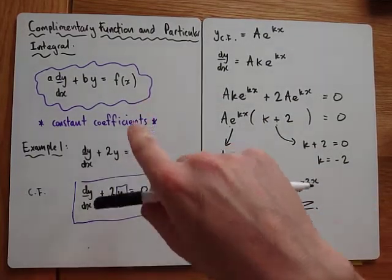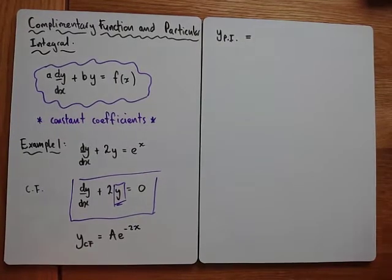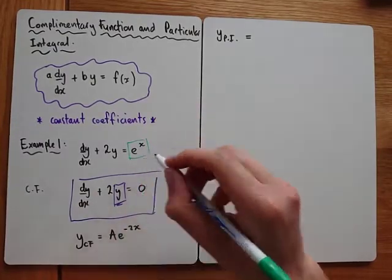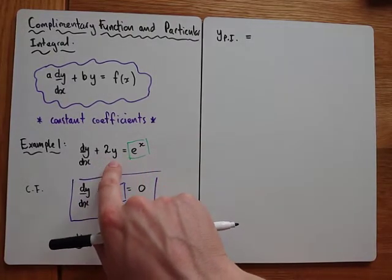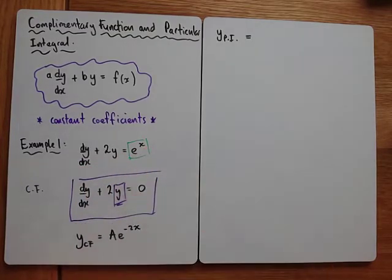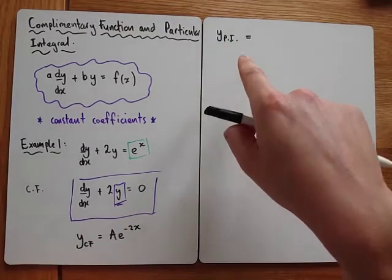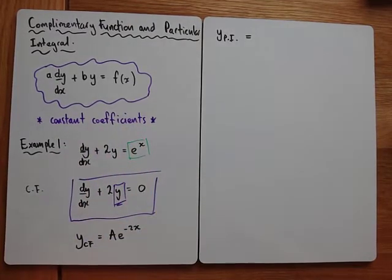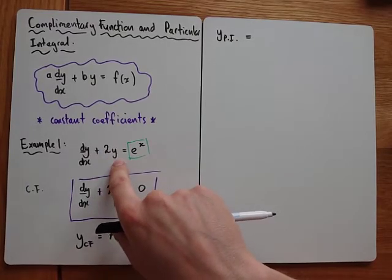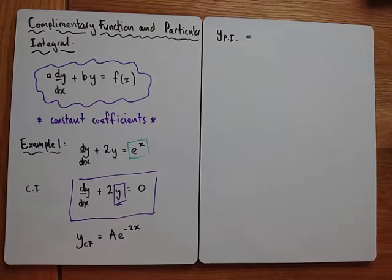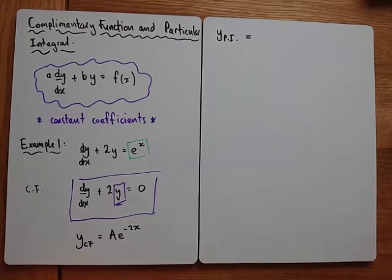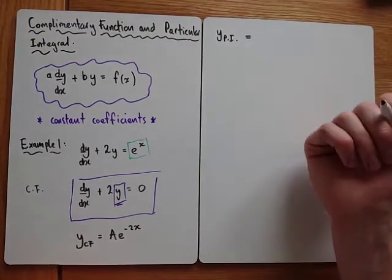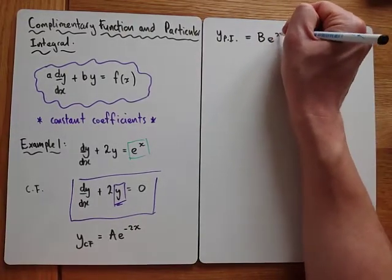OK, so we've got our complementary function — halfway there, we need to get our particular integral. For the particular integral, we don't ignore what's on the right-hand side. We look very closely at it, and in the booklet there's a guide to different types of particular integrals. We're looking for a function where 2 times by the function plus its derivative equals e to the x. It's obviously got to be an exponential — the original function has to be an exponential. Because when we differentiate exponentials the power stays the same, I know it's going to be some sort of be to the x, so let's just say b e to the x.